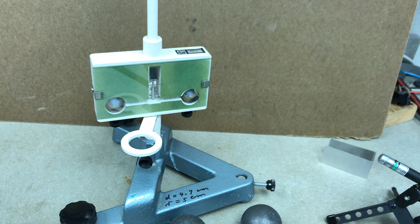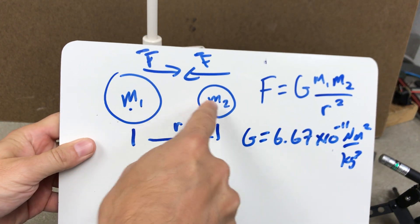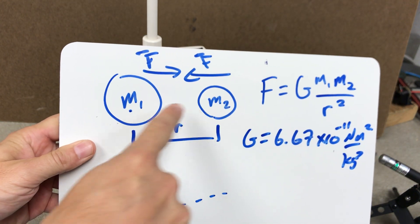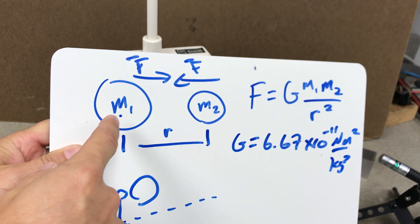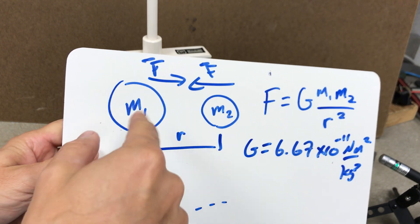Let me show you how. Here is a diagram showing two different masses, m1 and m2. There is a gravitational force attracting these two masses, F. It's really a vector and they both have that force pulling on them.